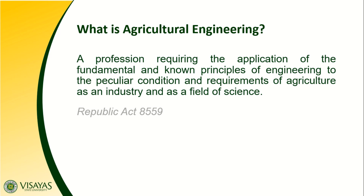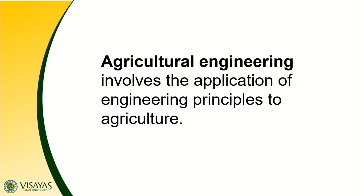Agricultural engineering is actually a combination of two equally broad disciplines: agriculture and engineering. When we say agriculture, it is the art and science of farming, including the cultivation of soil for the growing of crops and the rearing of animals in order to provide food, feed, fiber, and other products. When we say engineering, it is the art and science of making practical application of knowledge from pure sciences and mathematics in order to design, build, and use engines, machines, and structures. So technically, agricultural engineering involves the application of engineering principles to agriculture.